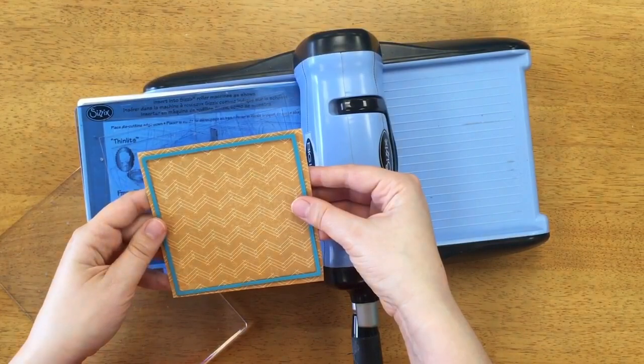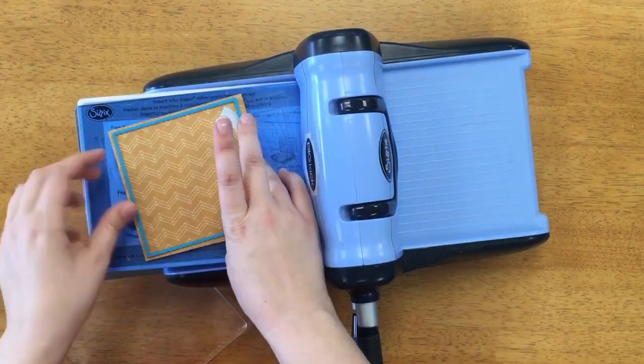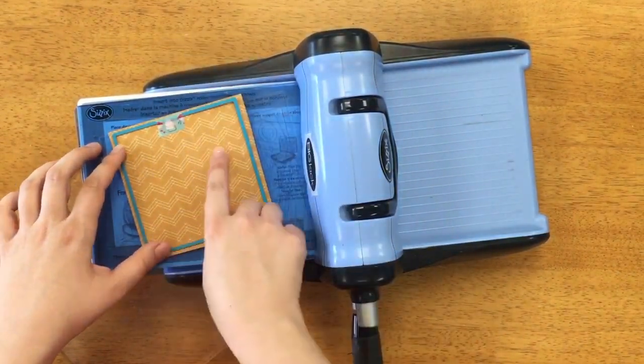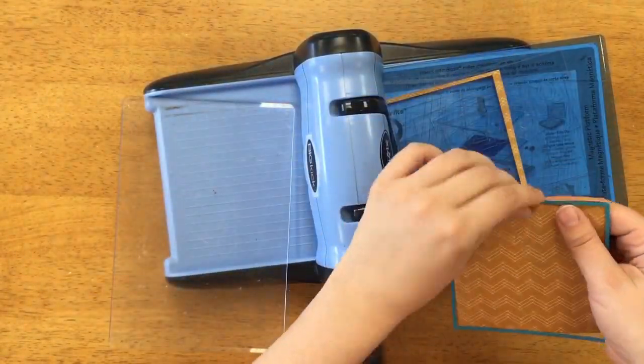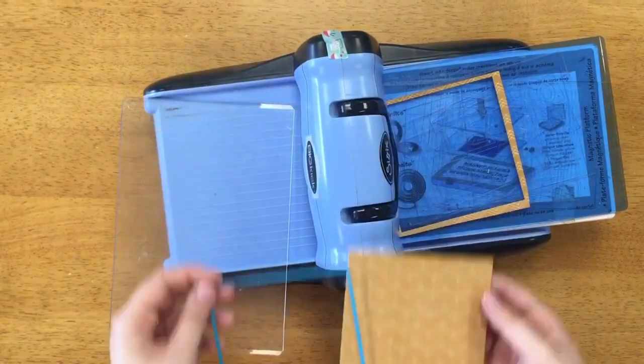To begin I am cutting a base piece or background piece with the 4x4 die from set A. I used some washi tape because this is pattern paper and I don't want it to look crooked on my final page.